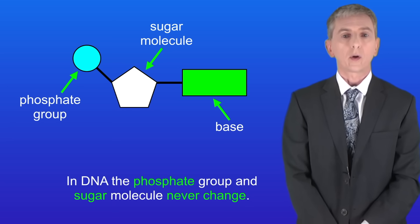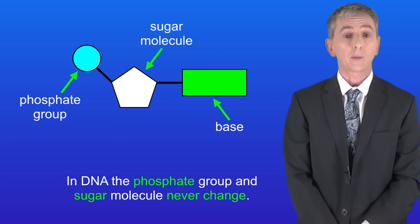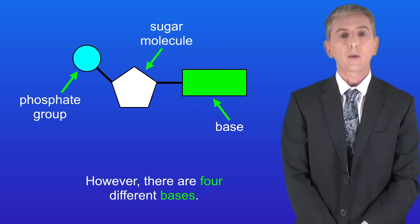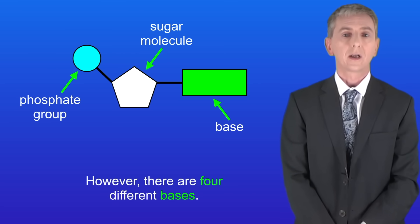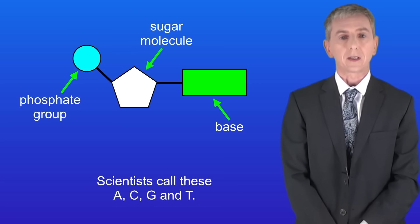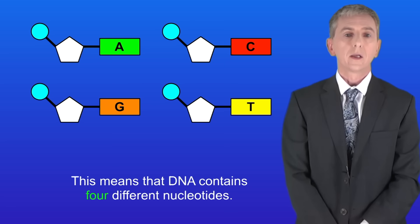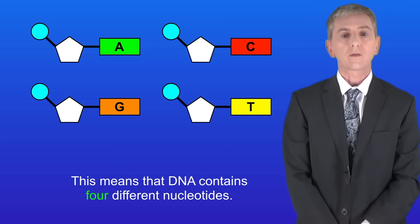Now one really important point is that in DNA the phosphate group and the sugar molecule never change. However there are four different bases. Scientists call these A, C, G and T. So this means that DNA contains four different nucleotides, and I'm showing these here.